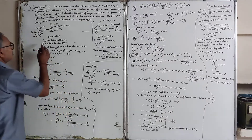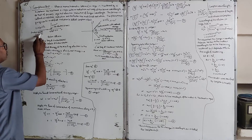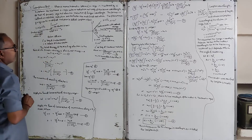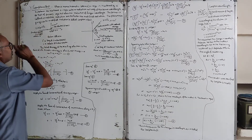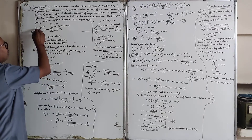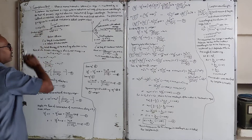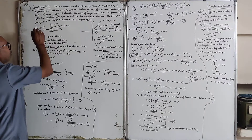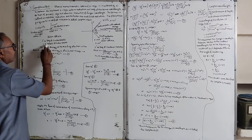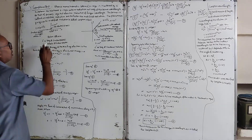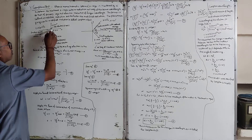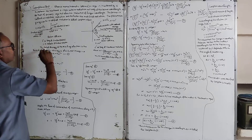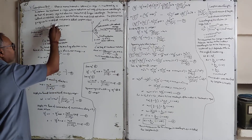The incident photon is a monochromatic beam of X-rays. Its energy is h-nu and the momentum is h-nu divided by c, where nu is the frequency of the incident photon and c is the velocity of light. This X-ray photon strikes a free electron at rest. The electron's velocity is zero, so its momentum is zero and its rest mass energy is m₀c².